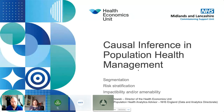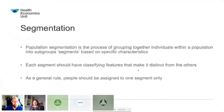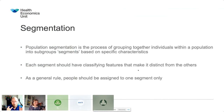So a quick whistle-stop tour because Bruno is the star of the show. First of all, segmentation. As many of you know, it's the process of grouping together individuals because summary statistics won't tell you everything. What we want is a segment that classifies these features, but you've got to be distinct from each other. As a general rule, you can only ever be in one segment at a time.